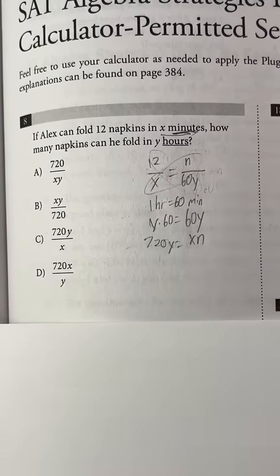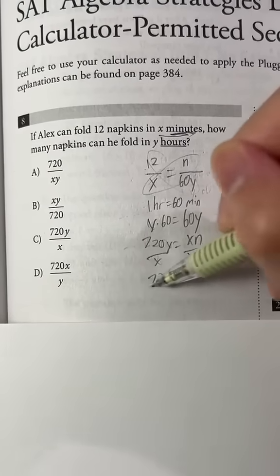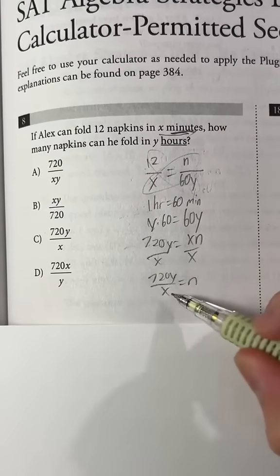And then lastly, we can divide both sides by x, which gives us 720y over x equals n. So this is our answer.